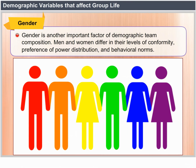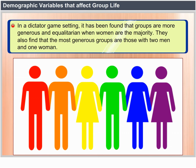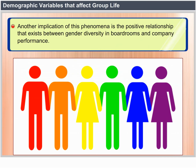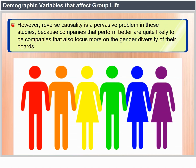Gender is another important factor of demographic team composition. Men and women differ in their levels of conformity, preference of power distribution, and behavioral norms. In a dictator game setting, it has been found that groups are more generous and equalitarian when women are the majority. They also find that the most generous groups are those with two men and one woman. Another implication is the positive relationship that exists between gender diversity in boardrooms and company performance.